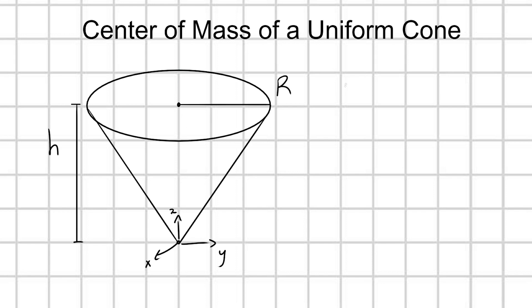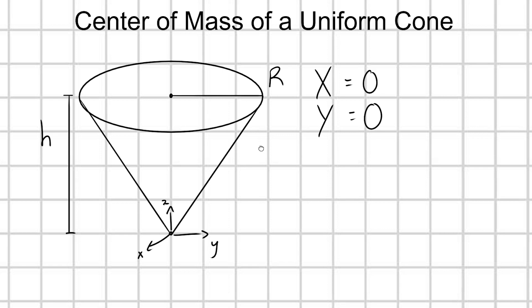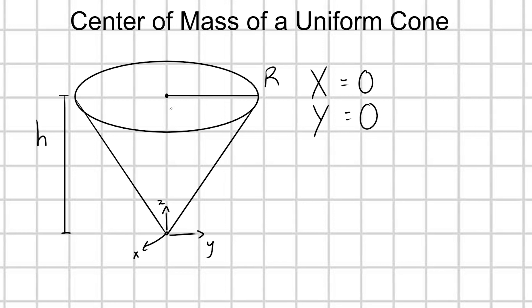So the x center of mass, which I'll label capital X, and the y center of mass position, which I'll label capital Y, both of these are going to be equal to zero. So what we're really interested in is just finding the z component of our center of mass.